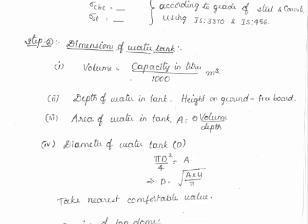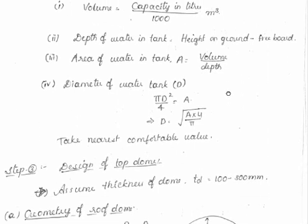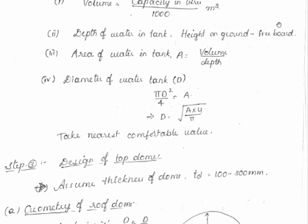Step 2 is the dimensions of the water tank. Volume is obtained by dividing the capacity of the water tank by 1000 to get the volume in cubic meters. Depth of the water tank is the height on the ground minus the freeboard — freeboard is the space left free without filling with water. Area of the water tank equals volume divided by depth. Since area equals π·D²/4, equating both gives the value of D.